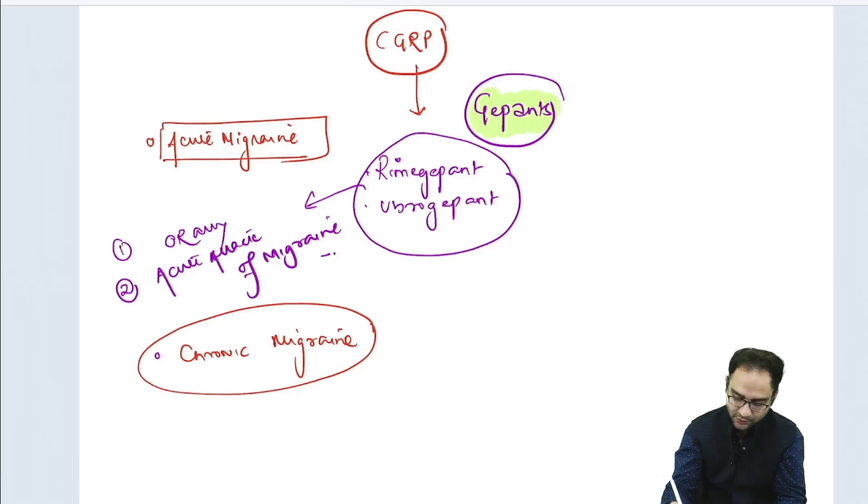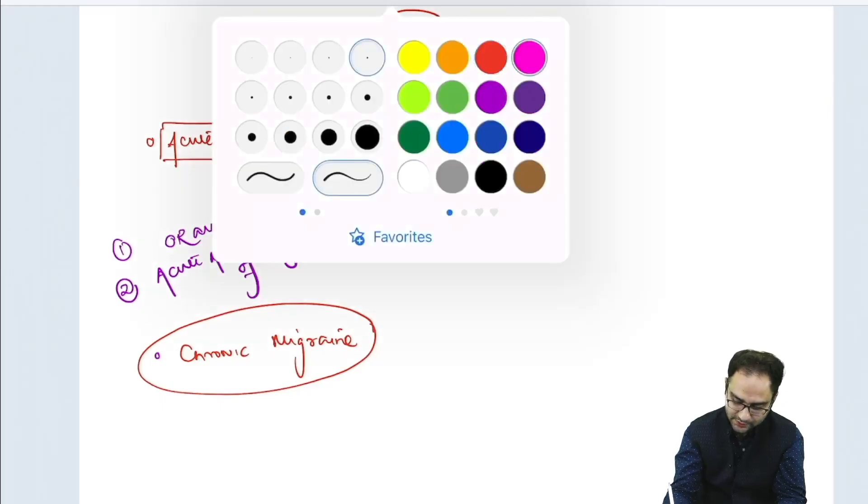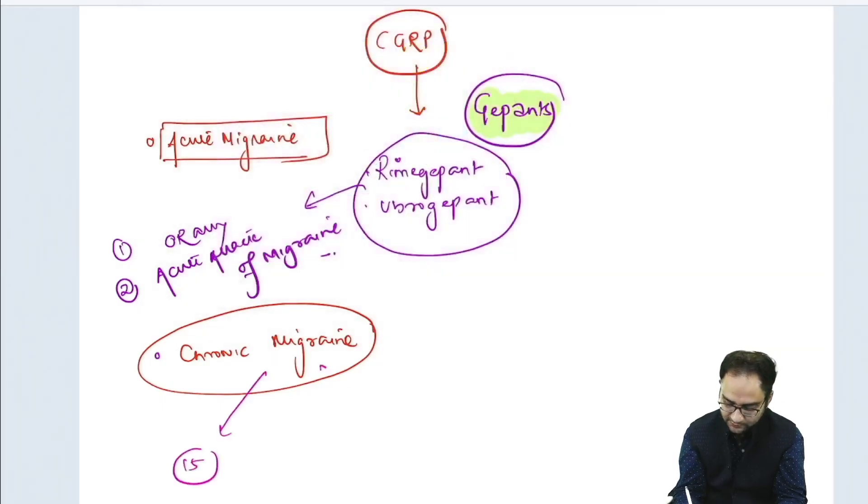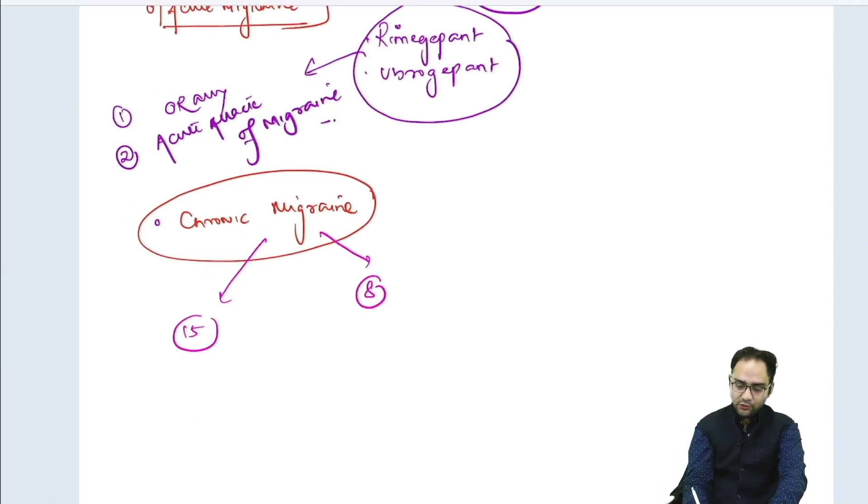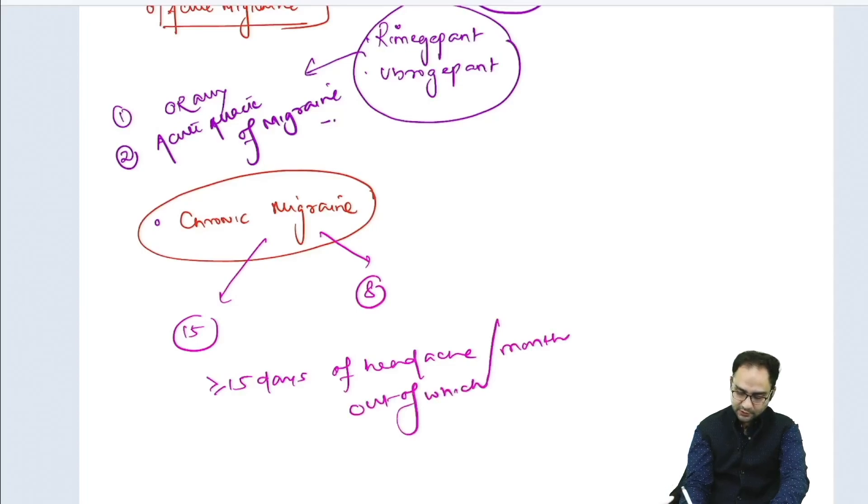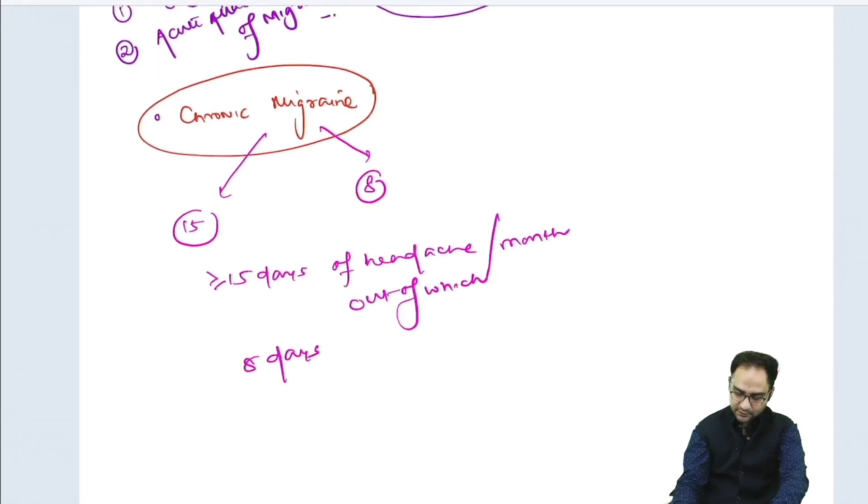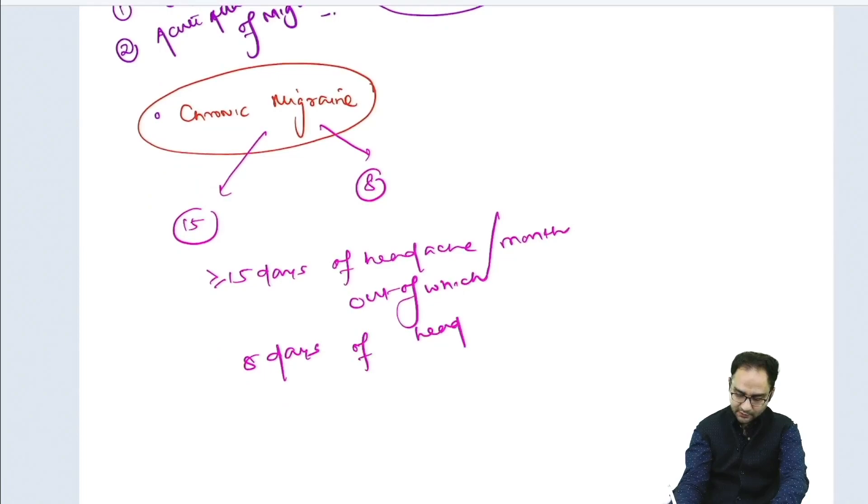In chronic migraine, you need to remember two numbers: one is 15 and the other is 8. I call it the rule of 15 and 8. You need to have more than 15 days of headache per month, out of which 8 days of headache should fulfill the criteria for migraine.